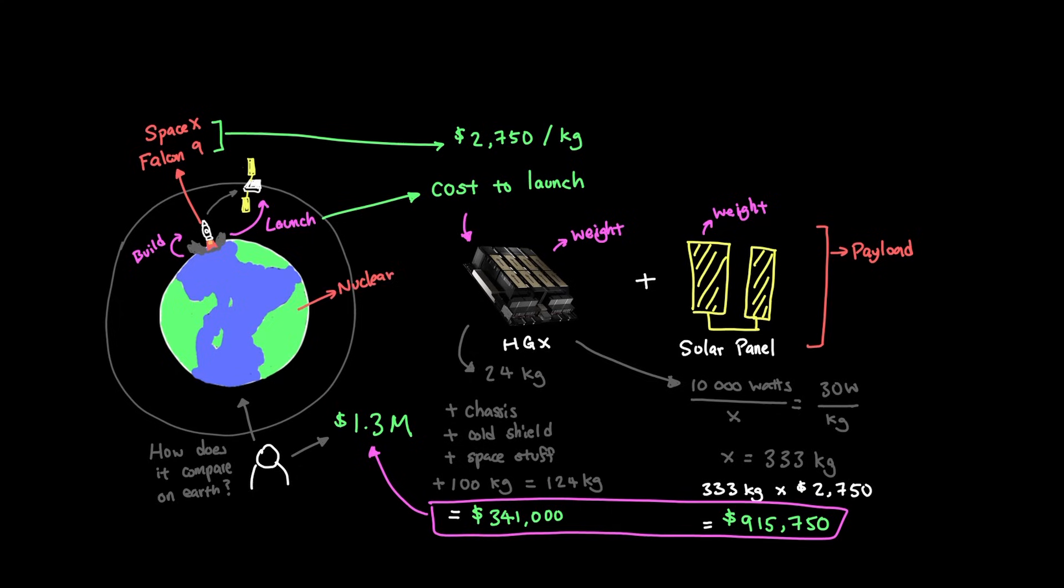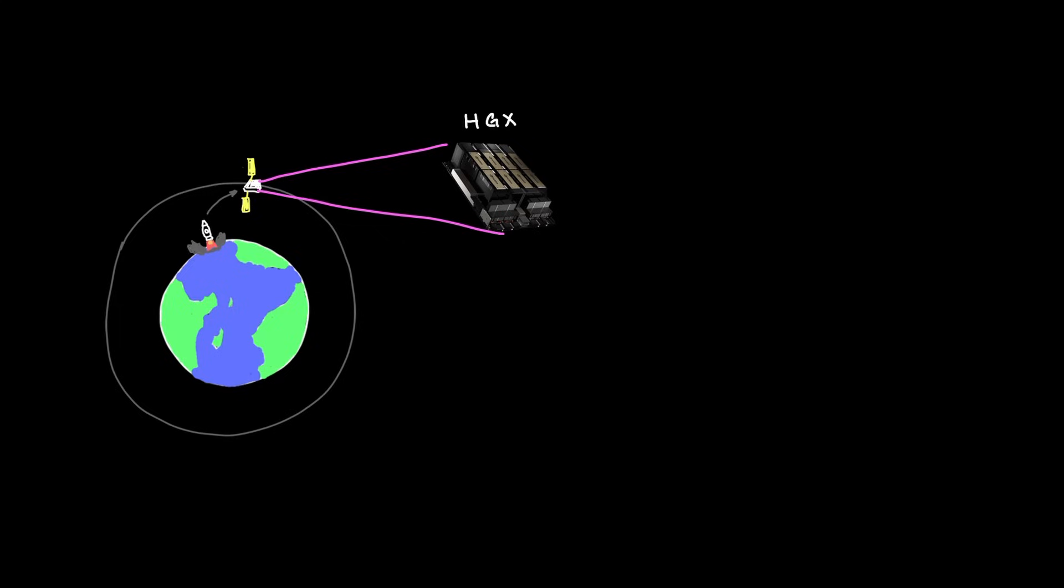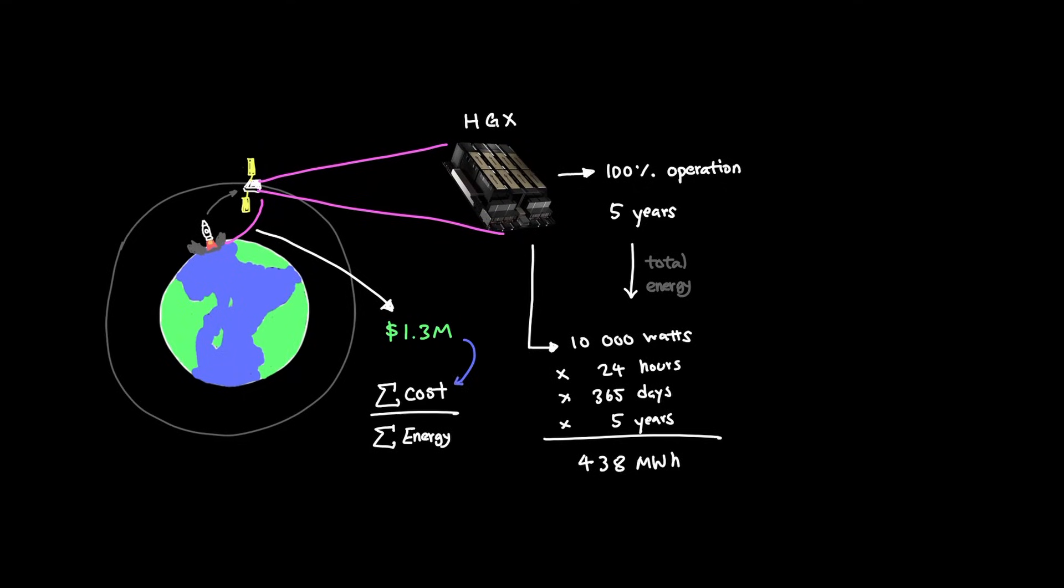I mean, on Earth, we have things like nuclear, gas, coal, wind, and more. It's gotta be cheaper to run this on Earth, right? Let's do the math and find out. If we assume that after the HGX unit is safely in orbit, and they're going to be running at nearly 100% of the time in orbit for five years until they're decommissioned, the total energy that will be used will be 10,000 watts times 24 hours times 365 days times five years. So altogether, 438 megawatt hours. And earlier, our rough cost estimate to build and launch the HGX unit was around $1.3 million. So if we divide the summation of costs, which is $1.3 million by the summation of energy produced over time, which is 438 megawatt hours, this means the cost of electricity per megawatt is $2,968.